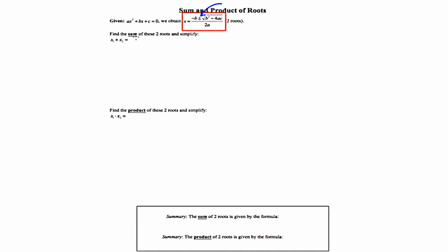We know that the sum means to add. So, I'm going to take these two roots, here in the red box, and I'm going to write them separately, and then I'm going to add them together.